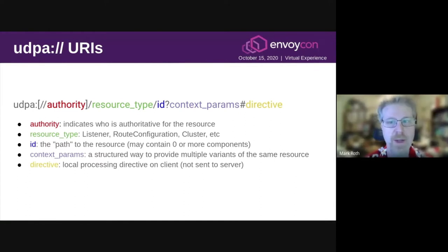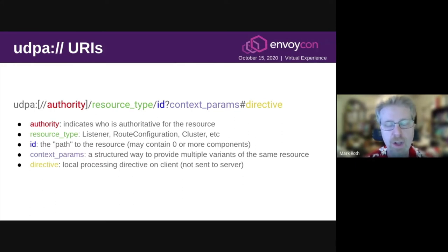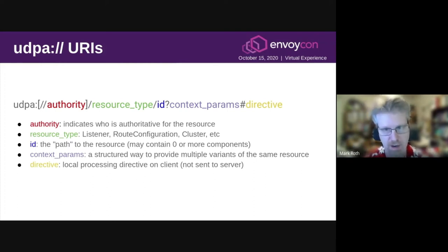The client's bootstrap file will indicate what server or servers to use to access resources for a given authority, which might or might not be the same as the actual name of the XDS server. An example of a case where you might want them to be different is in a large distributed infrastructure. For scalability reasons, you might have a local caching XDS proxy in each data center that has clients, and you might have those clients access the data through the local caching proxy, even though the authority is still some centralized single point across the entire global infrastructure.